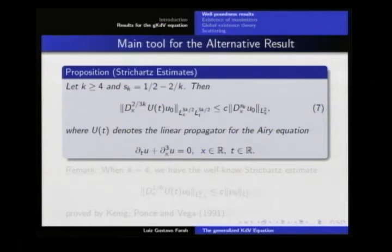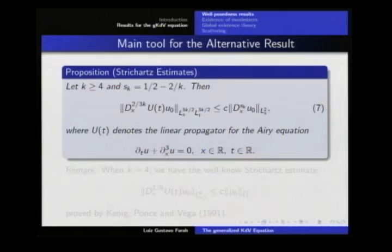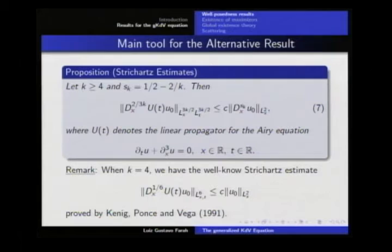The main tool to prove this result is what we call the refined Strichartz estimate. What we have here is a gain of 2 over 3K on the left-hand side, but we need to put some weight related to the critical space. For K equal 4, if we compute this, it becomes the classical 1/6, 6, 6 estimate proved by Kenig-Ponce-Vega in 1991. So we are generalizing this estimate to the supercritical case.